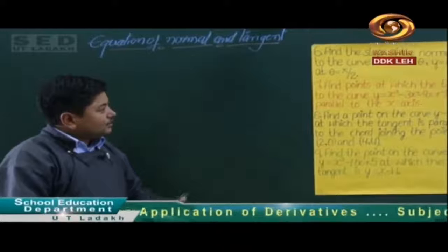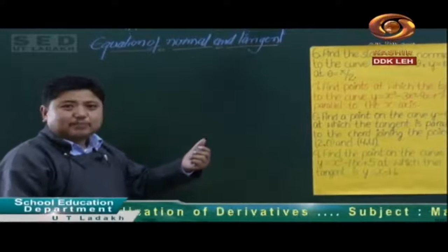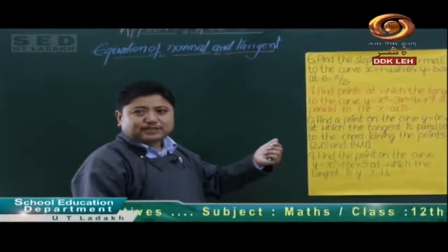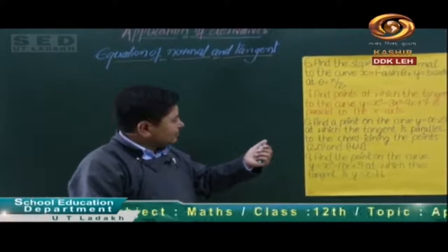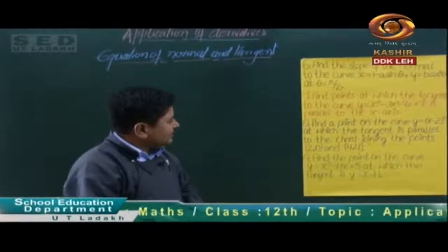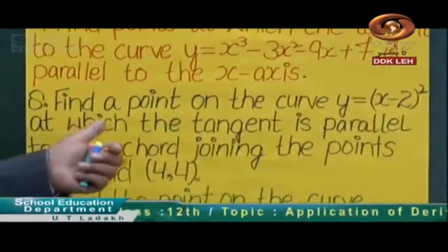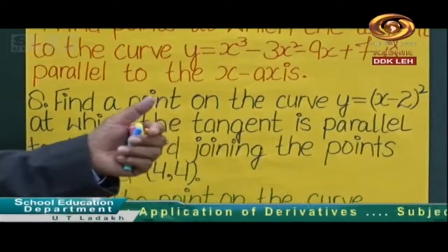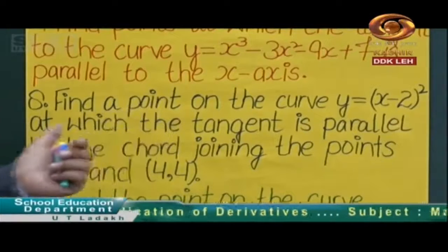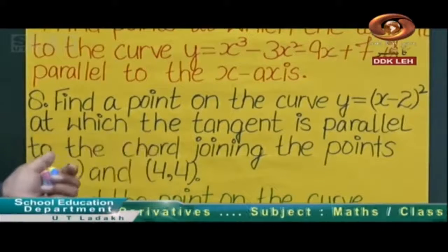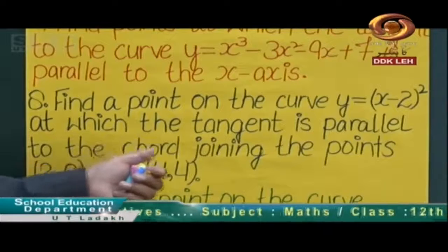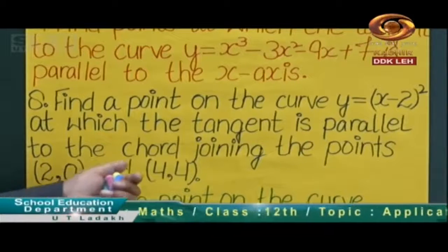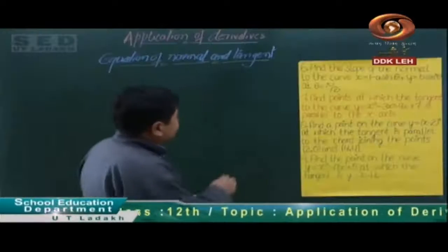Today we have completed question number 7, and today we will start with question number 8. So question number 8: find a point on the curve y is equal to (x minus 2) whole square at which the tangent is parallel to the chord joining the points (2,0) and (4,4).